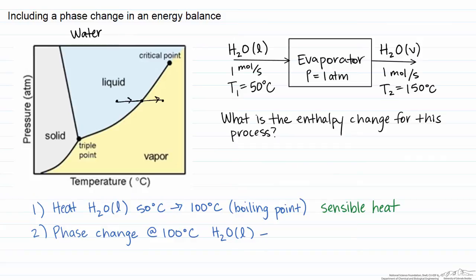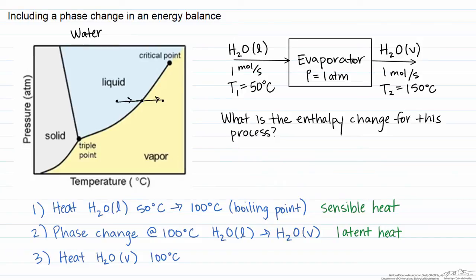While the phase change is occurring, there is no change in temperature or pressure. Finally, step three is we heat the H₂O vapor from 100 degrees C to its final temperature of 150 degrees C. This is also sensible heat.